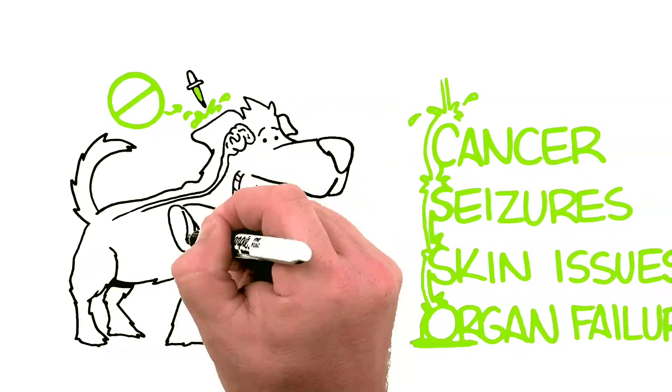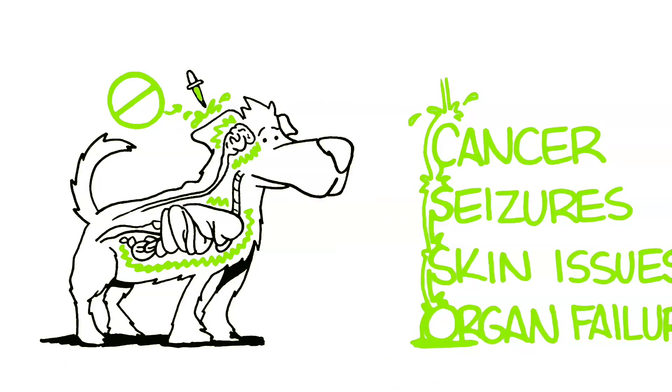Pesticides are neurotoxic poisons that disrupt the central nervous system of humans and animals. Don't take our word for it, read the back of the box.